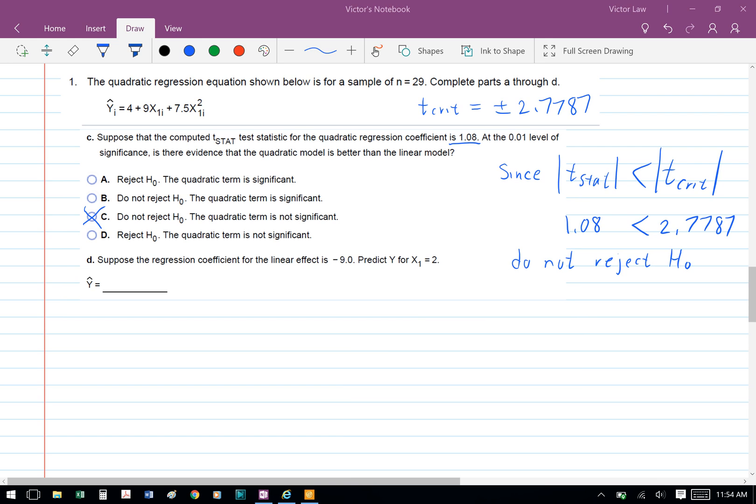Part d: The linear effect is now negative 9, so basically we have the slope of x₁ equals negative 9, and we're trying to solve for y given that x equals 2. So we're going to substitute that into the equation, so we have y equals 4 minus 9x plus 7.5x squared. So we have y equals 4 minus 9 times 2 plus 7.5 times 2 squared. So we have y equals 4 minus 18 plus 30, so we have y equals 16.